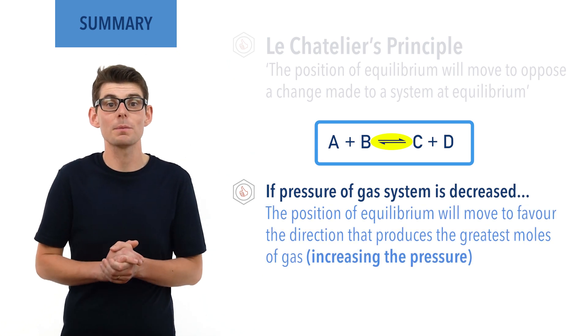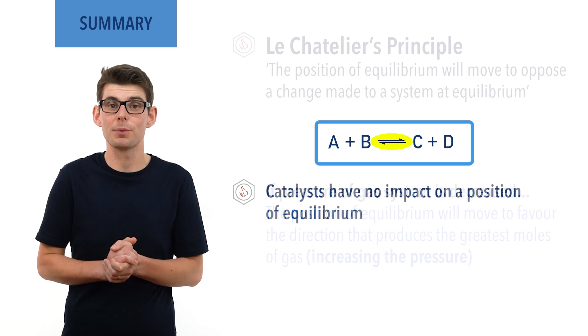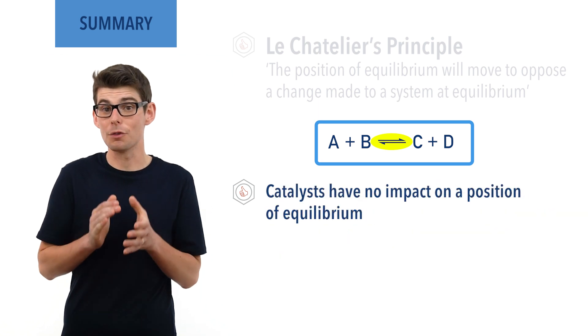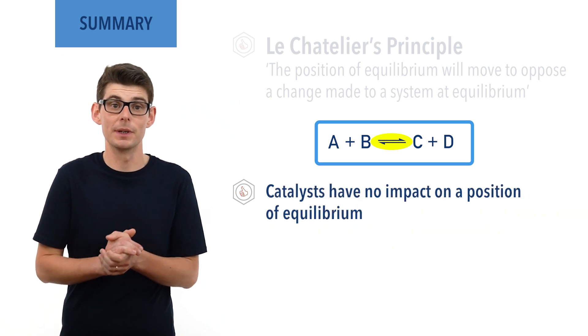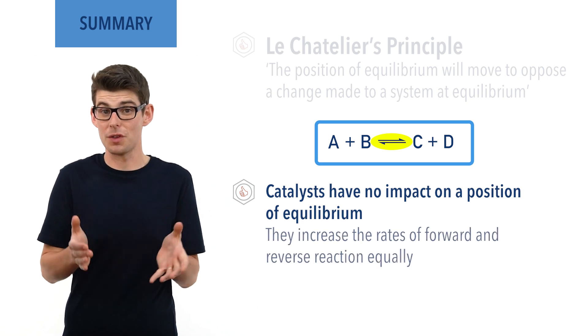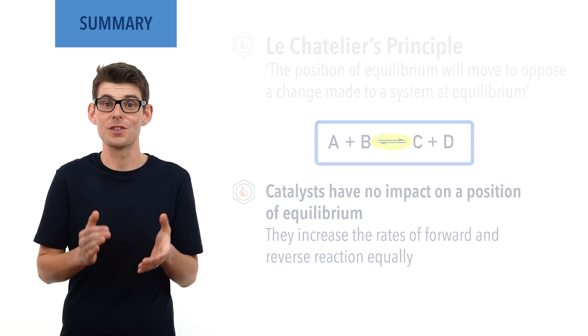Catalysts have no effect on positions of equilibrium — they increase the rates of forward and reverse reactions equally, just resulting in equilibrium being reached faster. I hope you found this video useful. Please check out other relevant videos in the links given in the description below and visit chemistrystudent.com for free notes and revision materials.